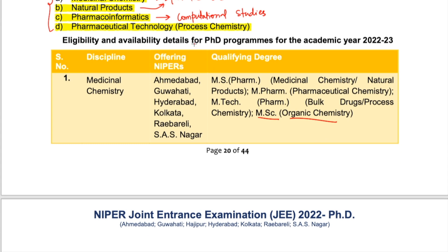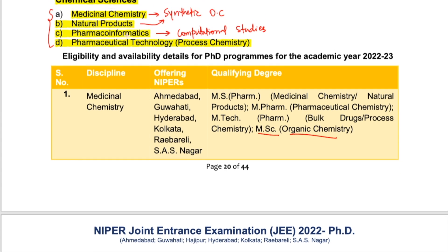If you have MSc in physical chemistry, you can apply for pharmacoinformatics. If you have MSc in inorganic chemistry, you are not eligible for any of these and cannot sit for this exam. Also, if you've done general chemistry masters with no specialization, there are chances you won't be allowed. If you're from a general chemistry background, please email the helpdesk — they'll be the best people to reply.